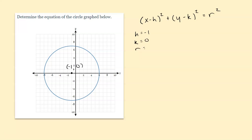Now we just have to determine what the r value is — what is the radius. Counting out from the center to the edge: 1, 2, 3, 4, 5, 6, 7. We could also determine this going up, down, or left. Now we can go ahead and plug these things into our generic formula.